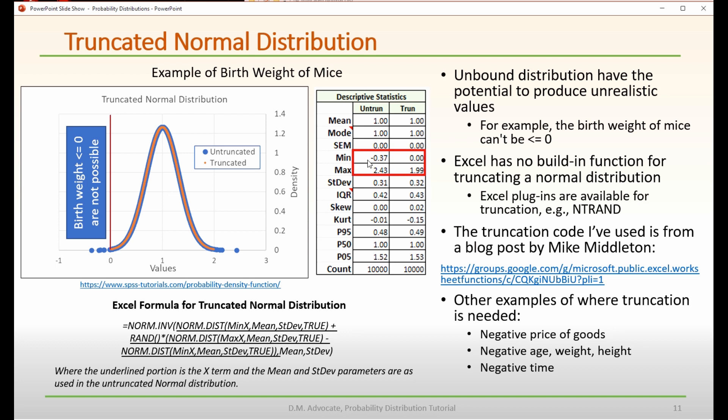And you also see that here in the descriptive statistics. We really want to range our birth weights between zero and two grams. But here we're seeing it goes from minus 0.37 to 2.43.